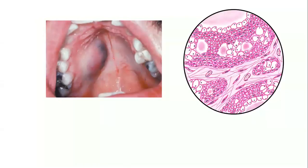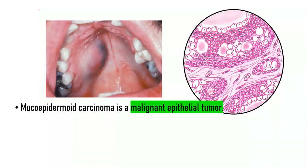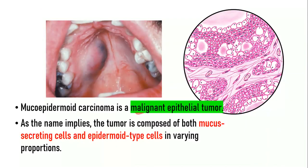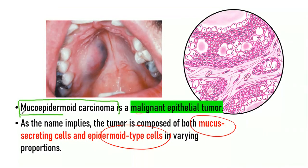Mucoepidermoid carcinoma is a malignant epithelial tumor composed of both mucus-secreting cells and epidermoid type cells. Let us understand this by breaking down the name itself. The name has two parts: mucoepidermoid and carcinoma. The carcinoma part tells us this is a malignant epithelial tumor.